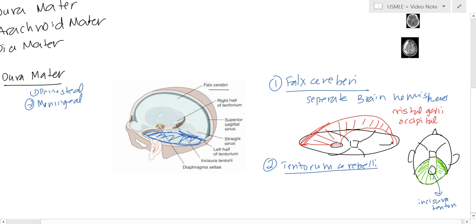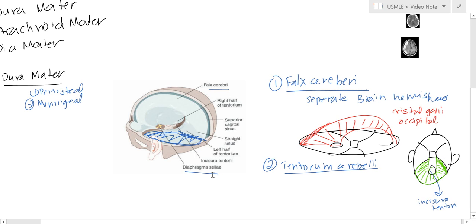There are also two smaller ones. You have the diaphragma sellae, which surrounds the pituitary stalk and just allows it to pass through. And you also have the falx cerebelli, which is basically like the falx cerebri continuing down and splitting the cerebellum.